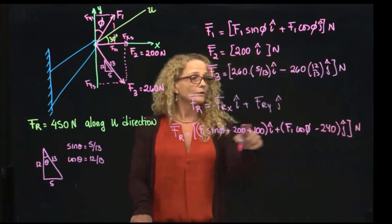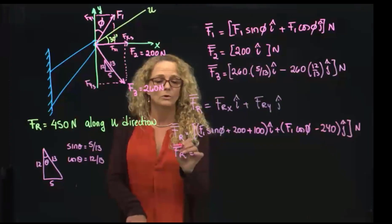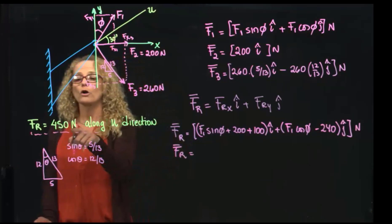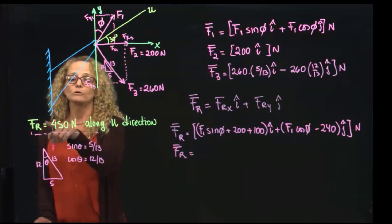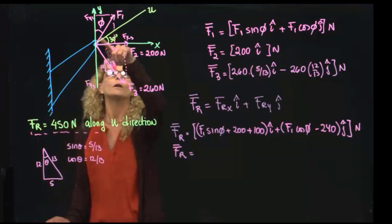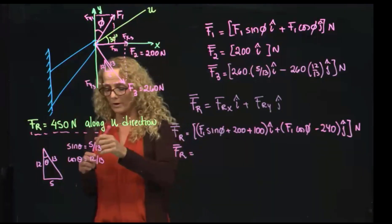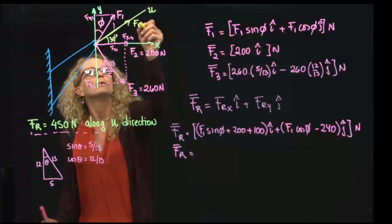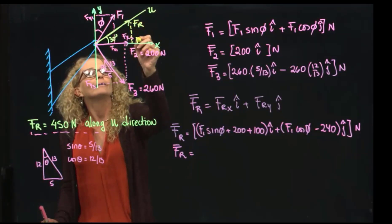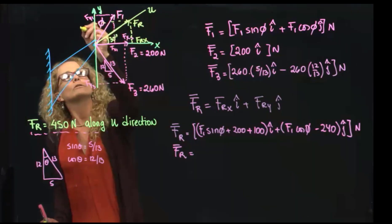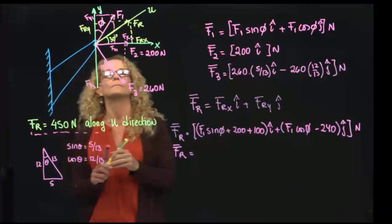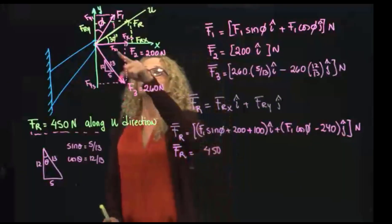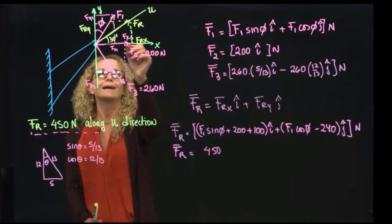And this over here equals to what we were told, right? We were told that the magnitude of the resultant force is 450 along the U-axis. So as you see, this is the resultant force, and I have a resultant force in X and a resultant force in Y. Therefore, it's 450.